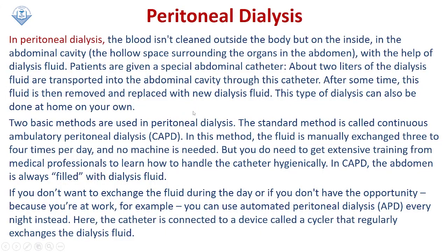Another method is peritoneal dialysis. In this case, blood is not cleaned outside the body; instead, the process takes place inside the abdominal cavity, which is the hollow space surrounding the abdominal organs. Patients are given a special abdominal catheter, and about two liters of dialysis fluid are transported into the abdominal cavity. After some time, this fluid is removed and replaced with new dialysis fluid.